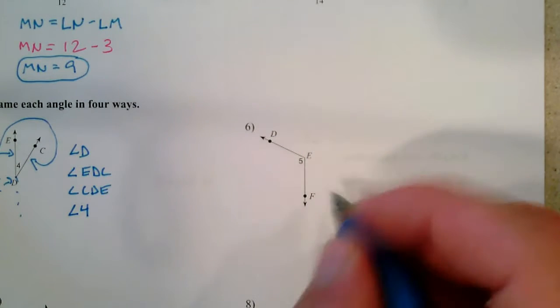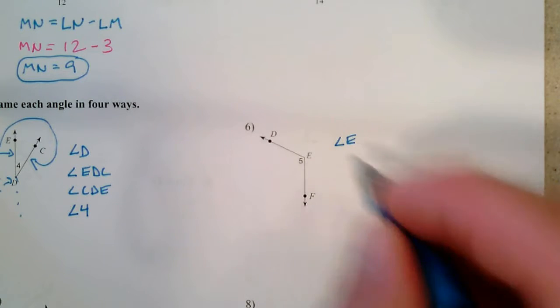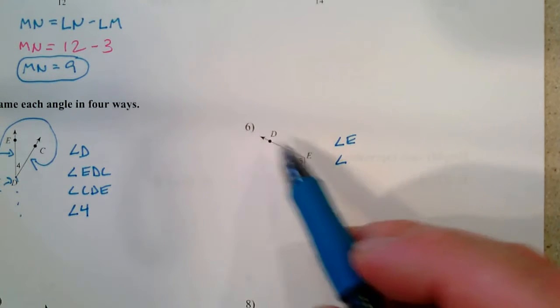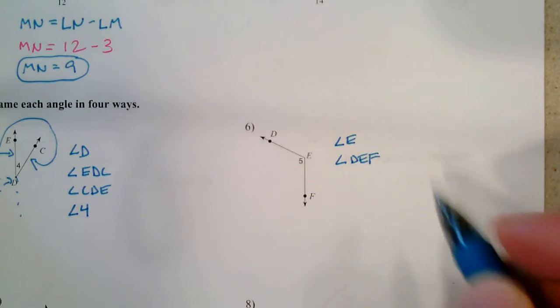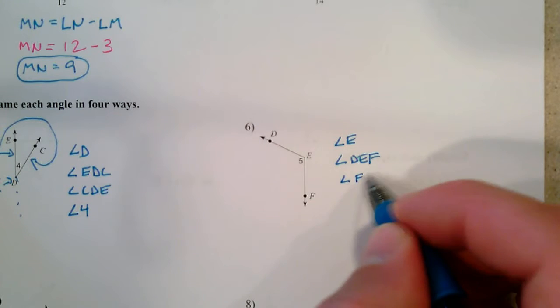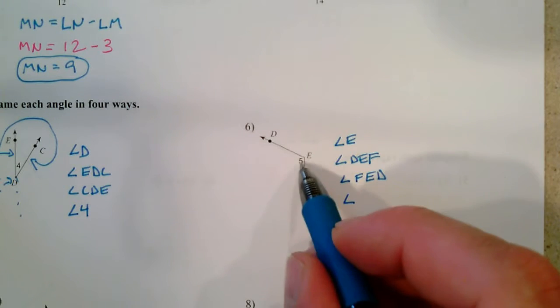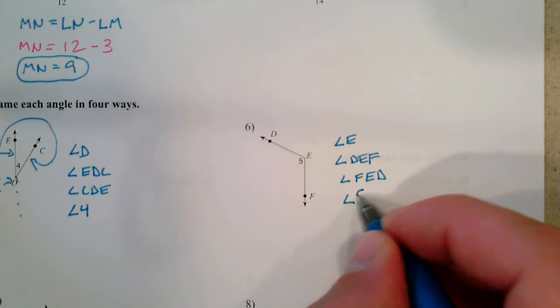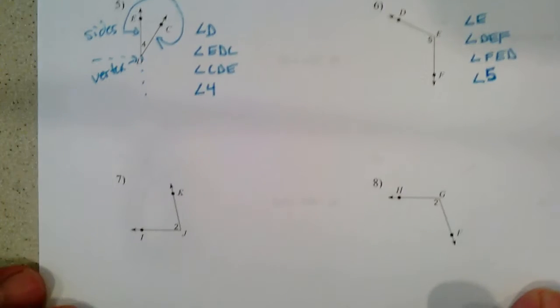Going next door here, we could call this angle E because the vertex is E, or doing the wraparound thing, DEF. Or going the other direction, FED. Or finally, there's a small 5 inside. We could call this angle 5. Make sure it looks like a 5. Sometimes my 5s look like S's.